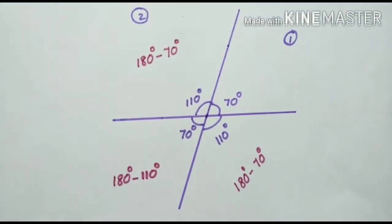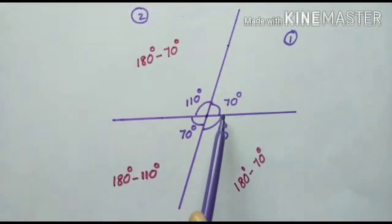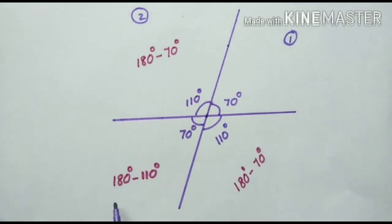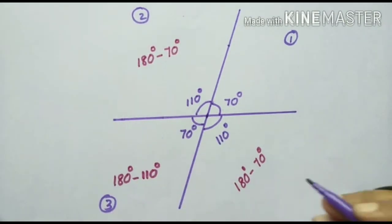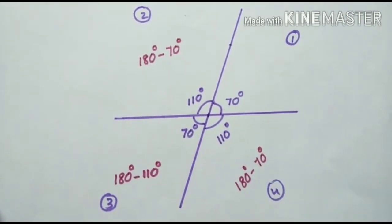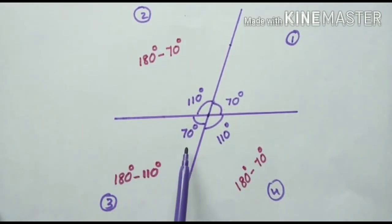So now we have all four angles. Angle 1 is 70 degrees, angle 2 is 110 degrees, angle 3 is 70 degrees, and angle 4 is 110 degrees.